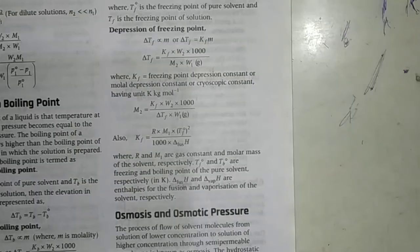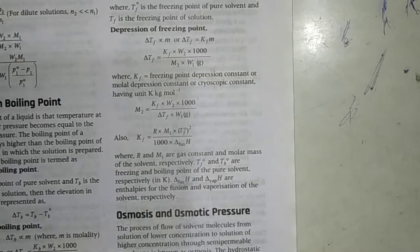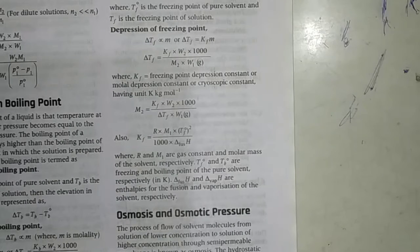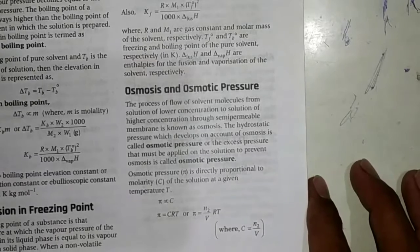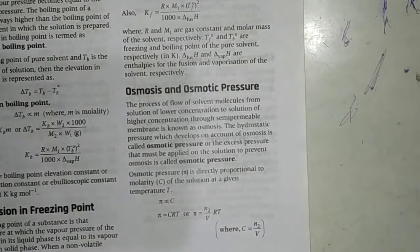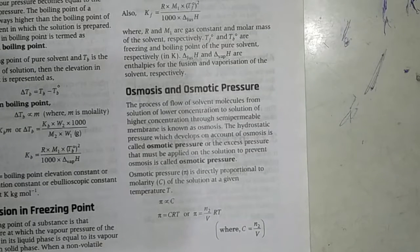The next one is depression in freezing point. The formula is delta TF equals KF into W 2 multiplied by 1000 upon molar mass into W 1. And the last colligative property is osmotic pressure which is represented by pi, equal to CRT where C means concentration, number of moles upon volume.